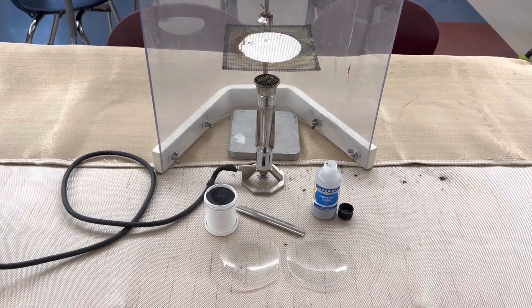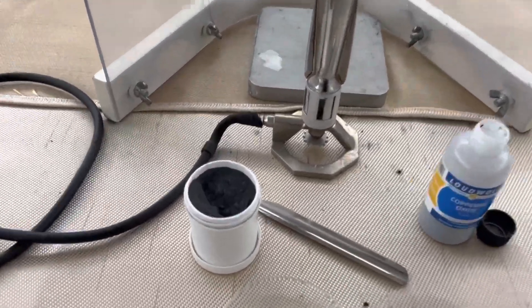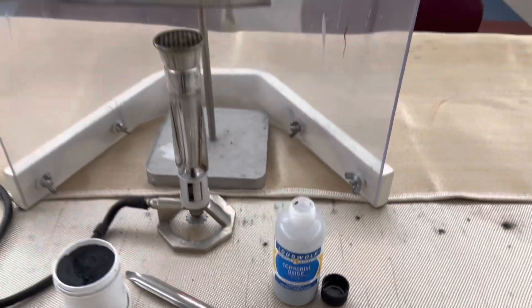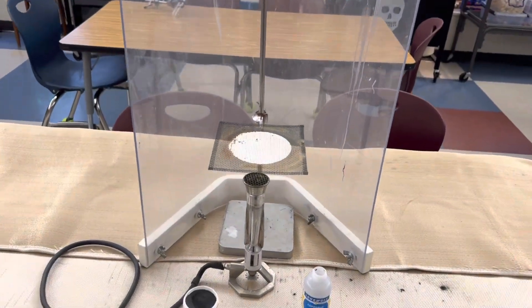All I'm using in this investigation is my Bunsen burner, magnesium powder, copper 2 oxide, my glass shield, and a ring stand.